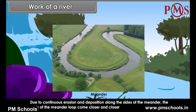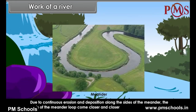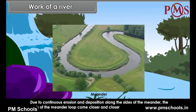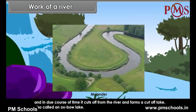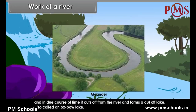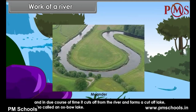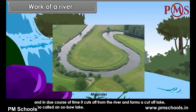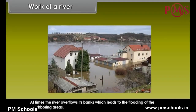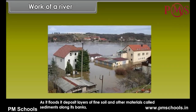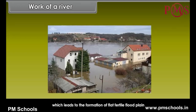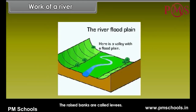Due to continuous erosion and deposition along the sides of the meander, the ends of the meander loop come closer and closer. And in due course of time, it cuts off from the river and forms a cut-off lake, also called an oxbow lake. At times, the river overflows its banks, which leads to the flooding of the neighboring areas. As it floods, it deposits layers of fine soil and other materials called sediments along its banks, which leads to the formation of a flat fertile flood plain. The raised banks are called levees.